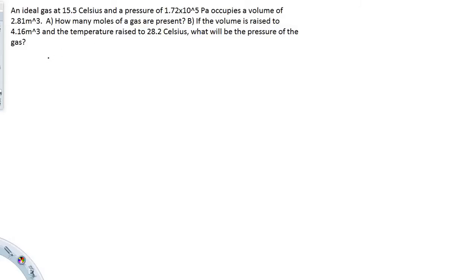So we know that we are going to be using PV equals nRT. The P is the pressure, the V is the volume, n is the number of moles, R is the Boltzmann's constant, and T is the temperature. This n right here is the variable that we are going to be solving for.